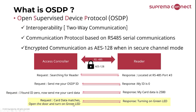The access control then requests card data. As you know, the readers will either have a pinpad or card reader hardware. In this example, my card data is 2580. The request confirms the card data matches — open the door and turn on the green LED. The reader opens the door while turning on the green LED light, demonstrating two-way communication with a secure value.